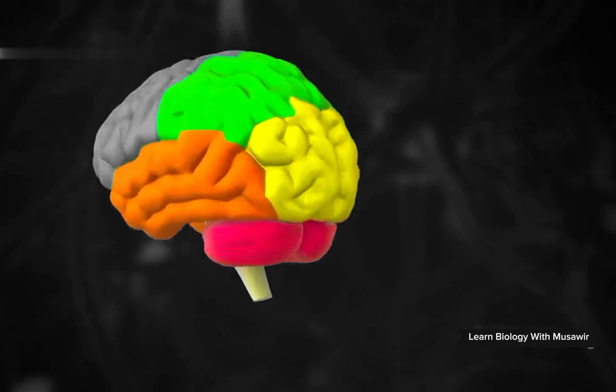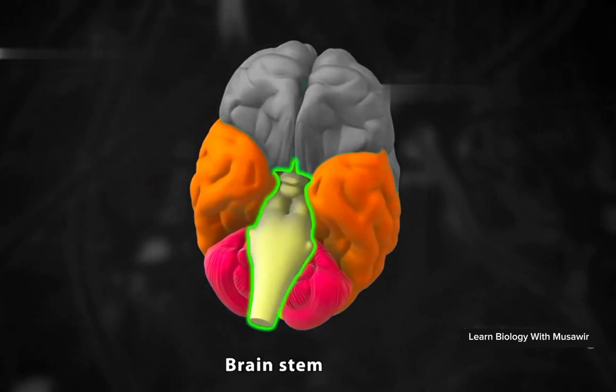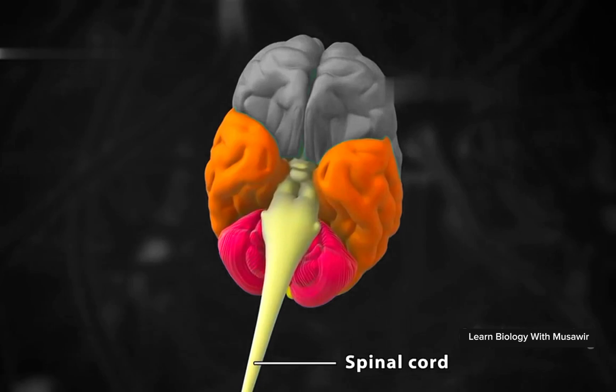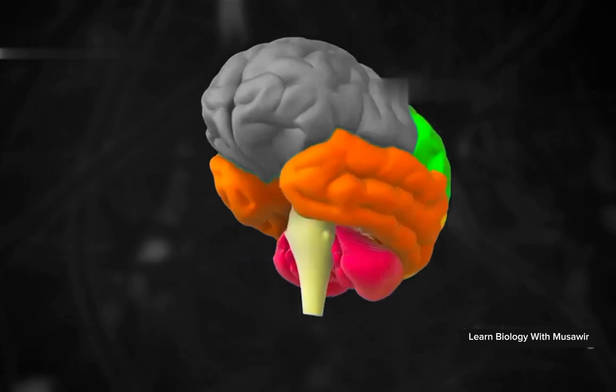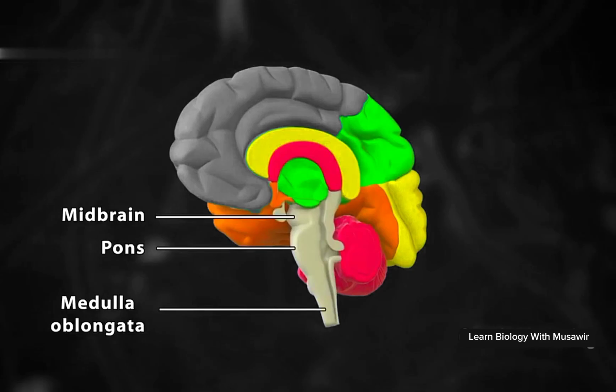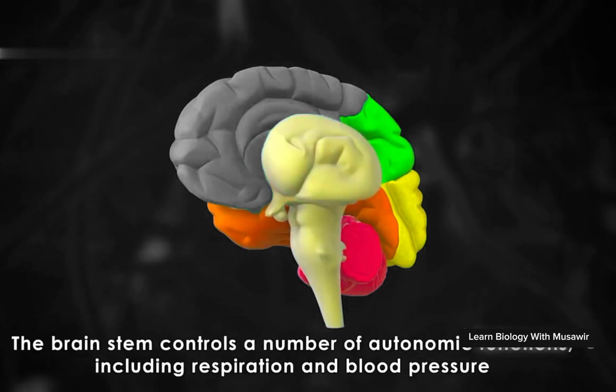The brain stem is located beneath the cerebrum and in front of the cerebellum. It connects the brain with the spinal cord and is composed of the midbrain, pons, and medulla oblongata. The brain stem controls a number of autonomic functions including respiration and blood pressure.